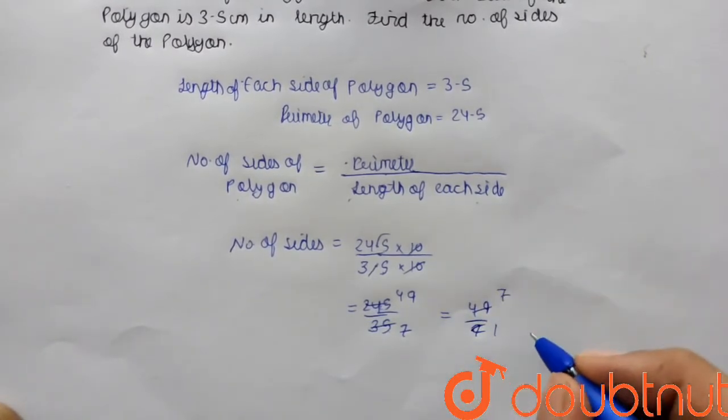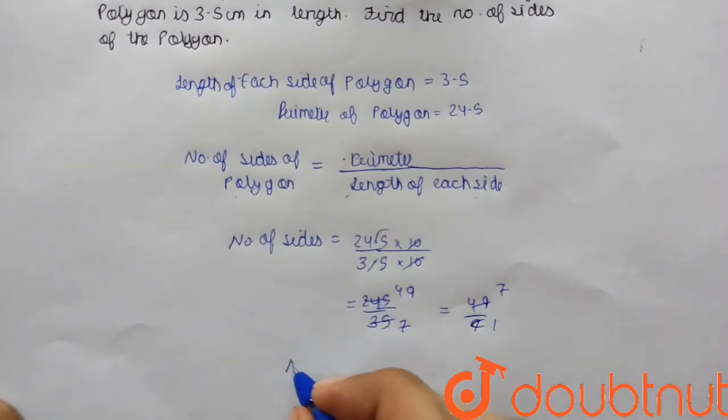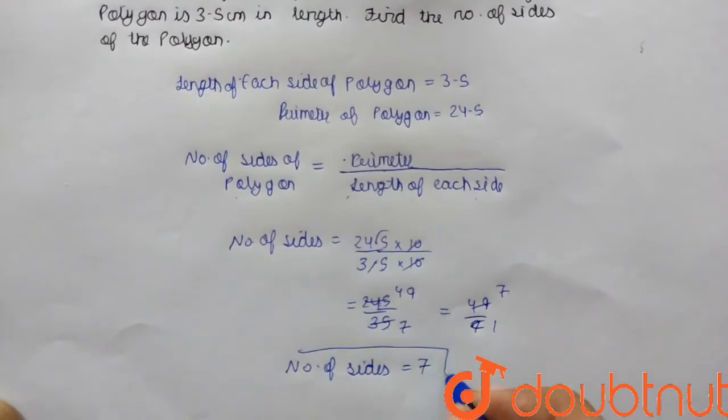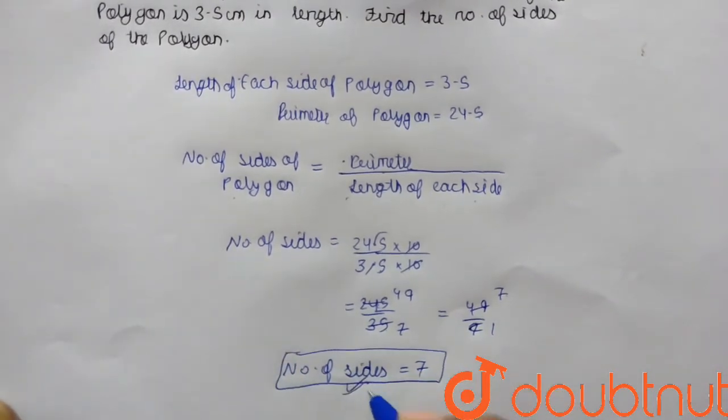Seven 1s are 7, seven 7s are 49. So number of sides are 7. The number of sides in the given polygon is 7.